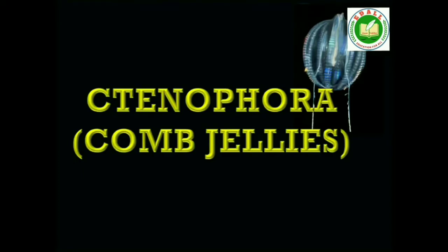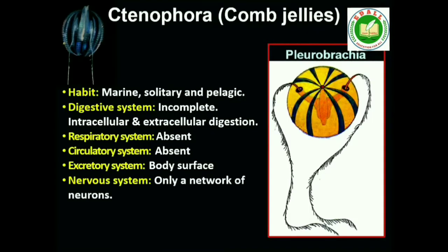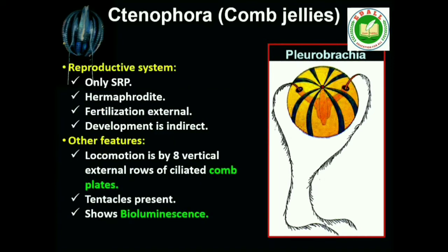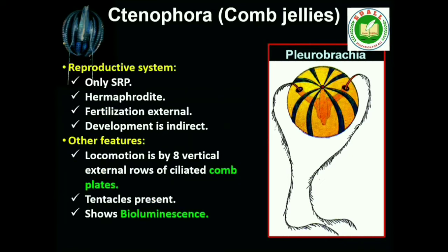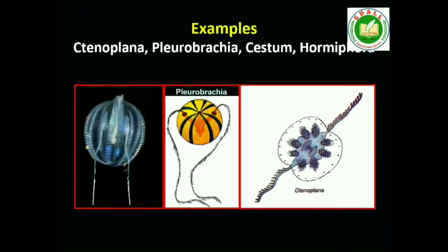Third: Phylum Ctenophora. Ctenophores, commonly known as sea walnuts or comb jellies, are exclusively marine, radially symmetrical, diploblastic organisms with tissue level of organization. The body bears eight external rows of ciliated comb plates which help in locomotion. Digestion is both extracellular and intracellular. Bioluminescence — the property of a living organism to emit light — is well marked in ctenophores. Sexes are not separate; reproduction takes place only by sexual means. Fertilization is external with indirect development. Examples: Pleurobrachia and Ctenoplana.